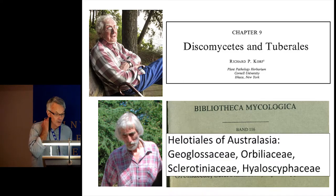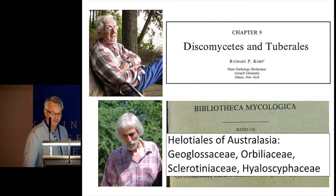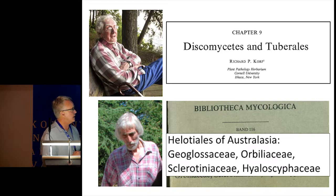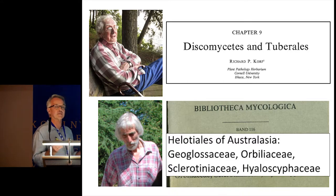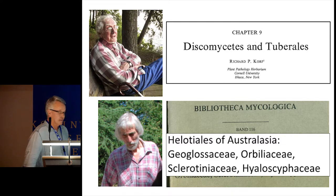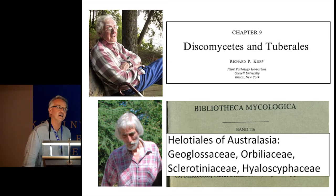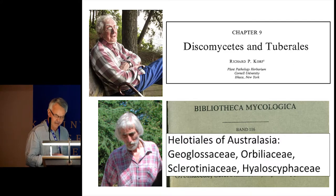The title of Brian's book — Helotiales of Australasia: Geoglossaceae, Orbiliaceae, Sclerotinaceae, Hyaloscyphaceae — illustrates quite nicely the impact that DNA sequencing is having on Discomycete taxonomy. Two of those families, Geoglossaceae and Orbiliaceae, are no longer in the Helotiales — they're not even in the Leotiomycetes; they've got different classes of their own. The Sclerotinaceae, in the sense that Brian used the name, includes species that we now know are much more closely related to Hymenoscyphus — a completely different family. So Brian was actually treating more families than he realised at the time.